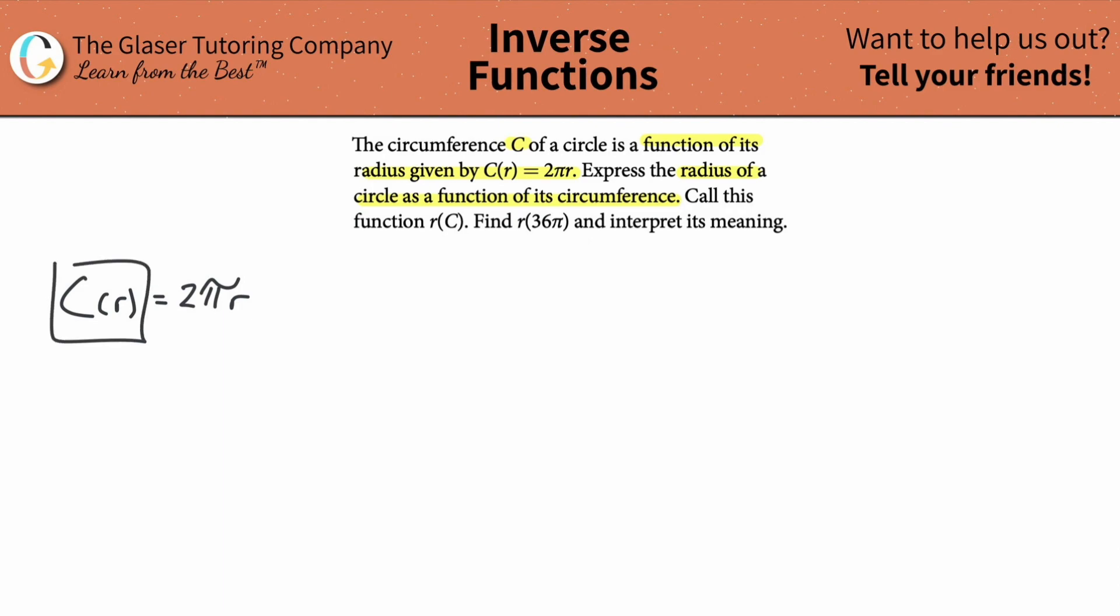Now you can just write this as C if you want, and you might recognize this formula as 2πr, right? Circumference is equal to 2π multiplied by the radius of the circle. This is how you probably see it normally.